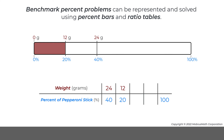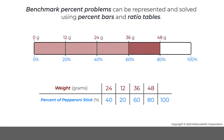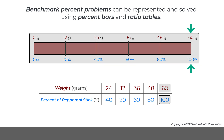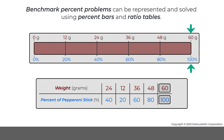Next, 20% can be repeatedly added to get 60%, 80%, and 100%. So, 100% of the pepperoni stick weighs 60 grams. Once again, this percent bar strategy can be represented in a ratio table.